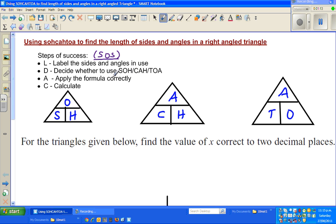So the first thing is to label, then you have to decide which to use. If you are dealing with O and H, that is opposite and hypotenuse, you will use SOH. If you are dealing with adjacent and hypotenuse, you will be using CAH.